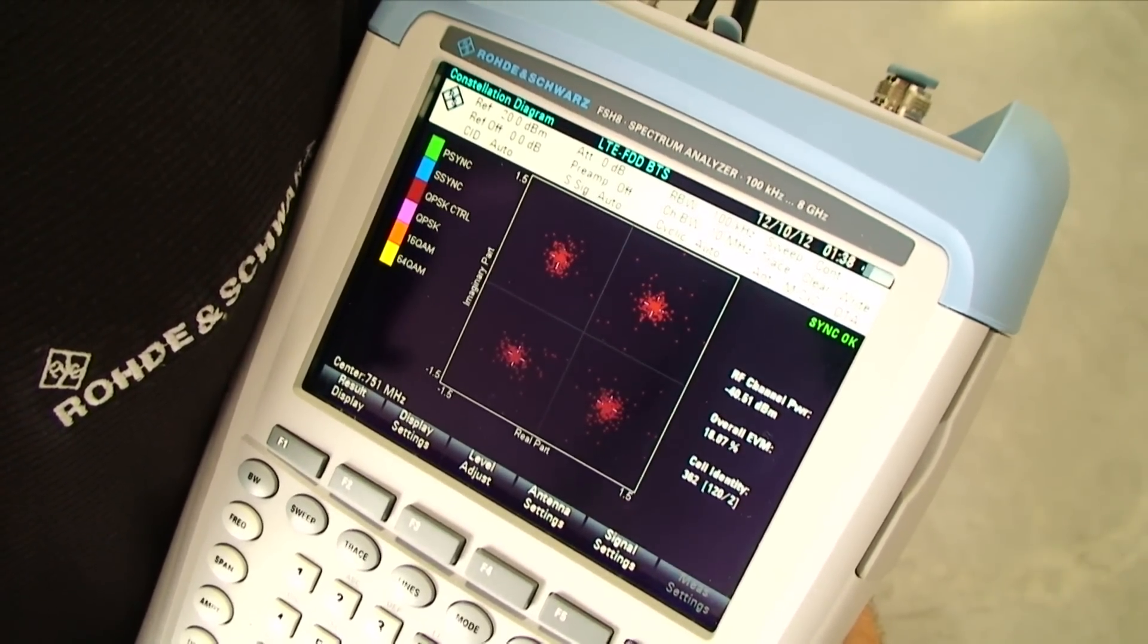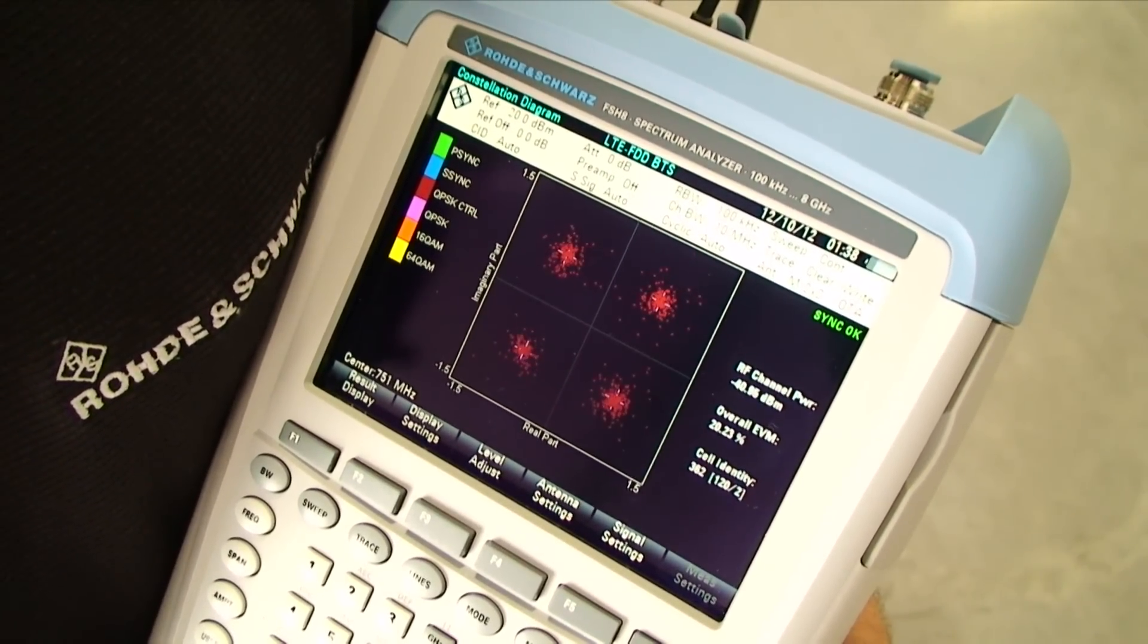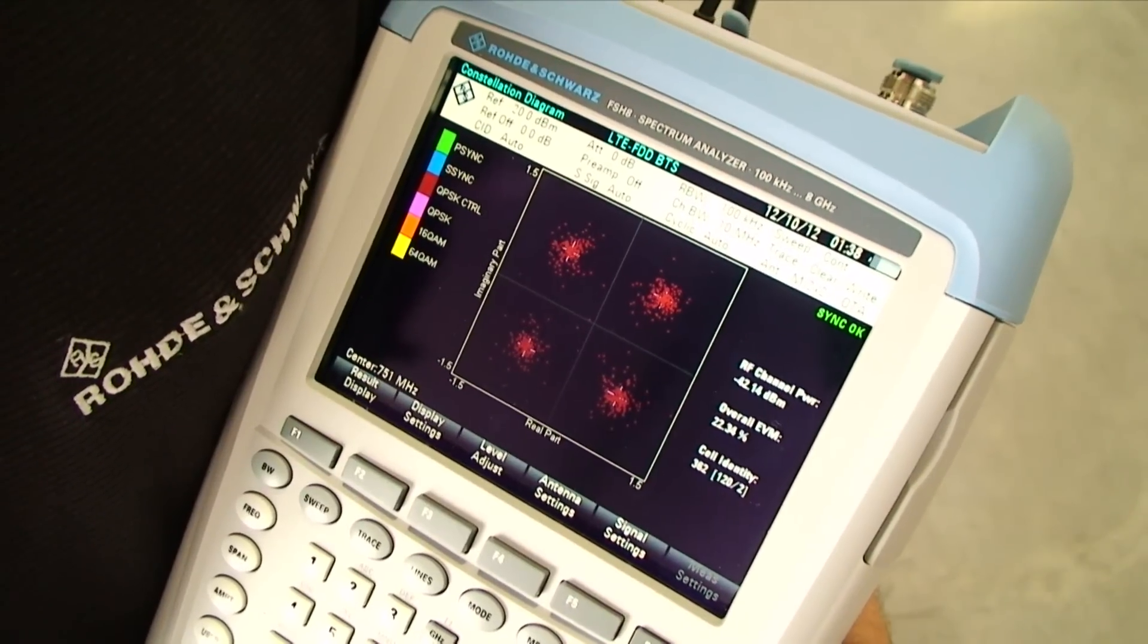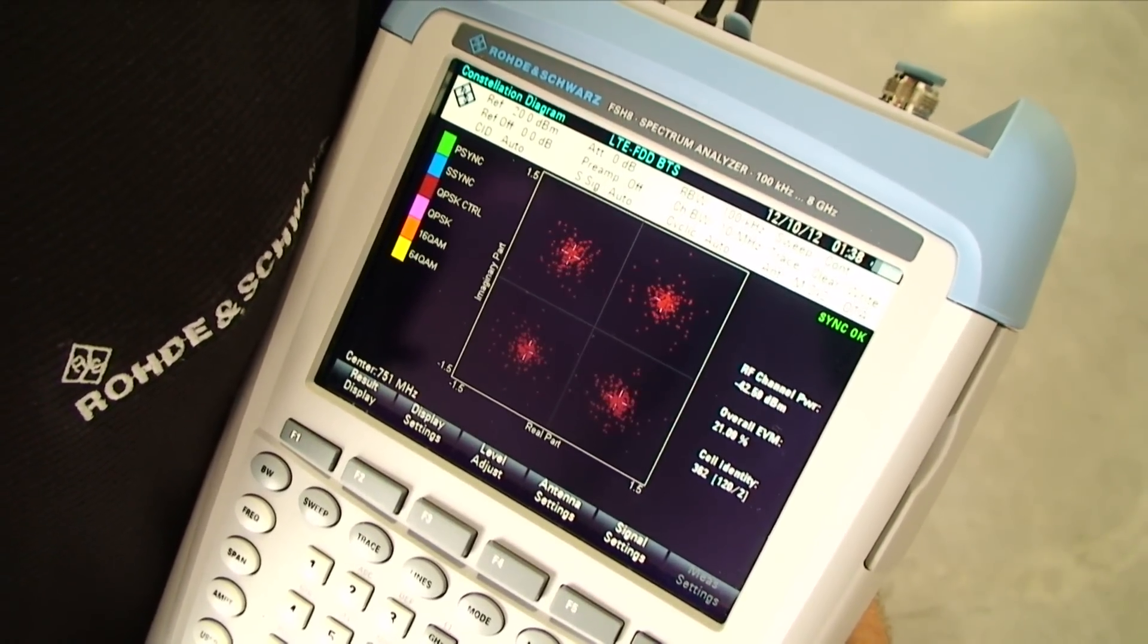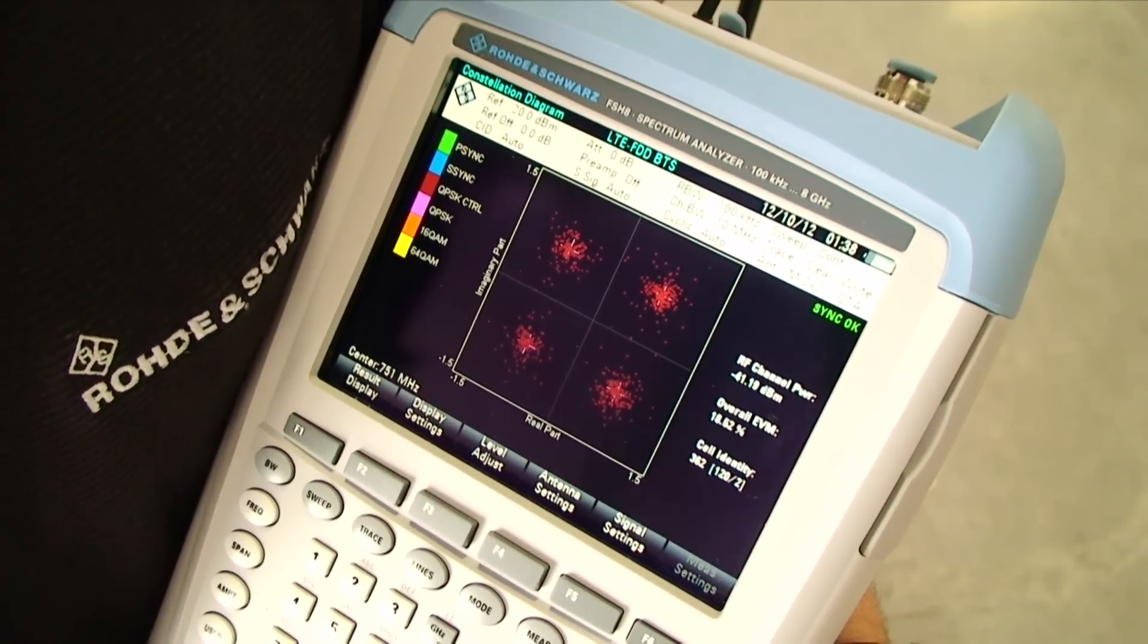Now as the modulation scheme changes, say you see yellow dots, you know that 64QAM is active. That means that there's not as much traffic activity. On the right side of the screen, you also have some onboard measurements such as RF channel power, overall EVM, and again the cell identity.